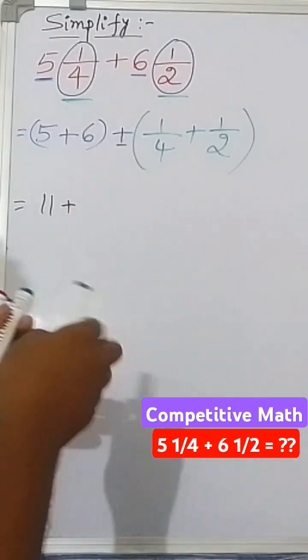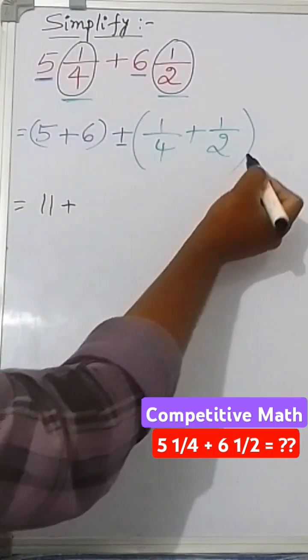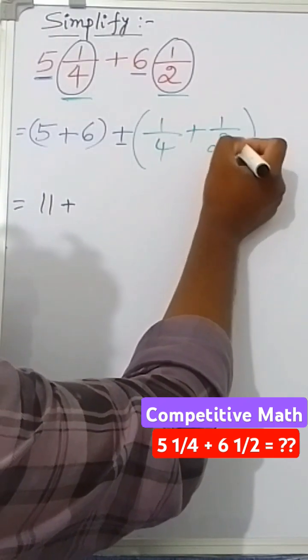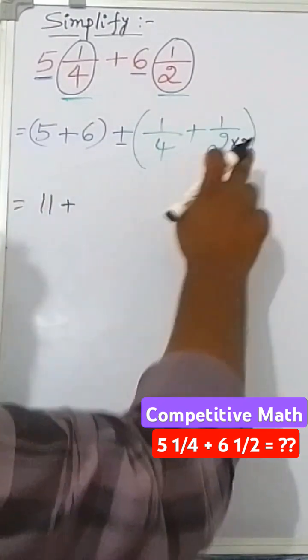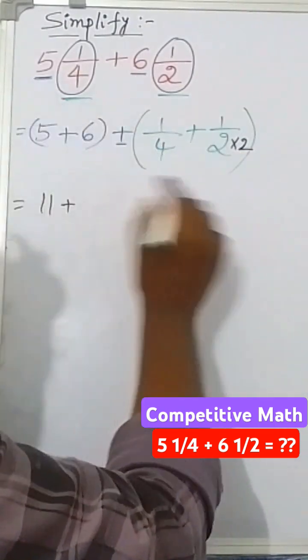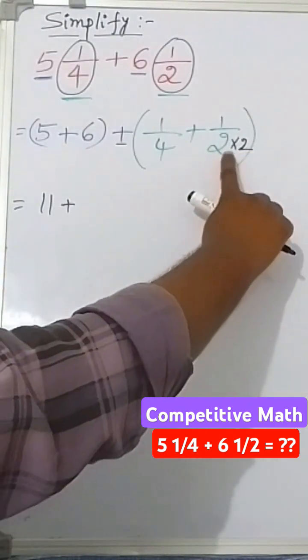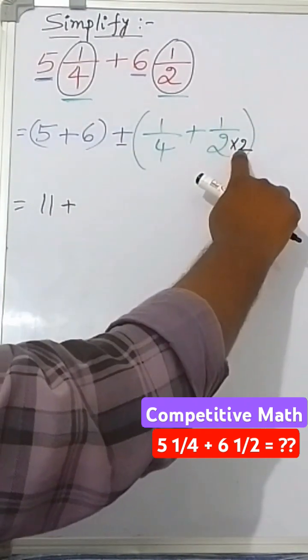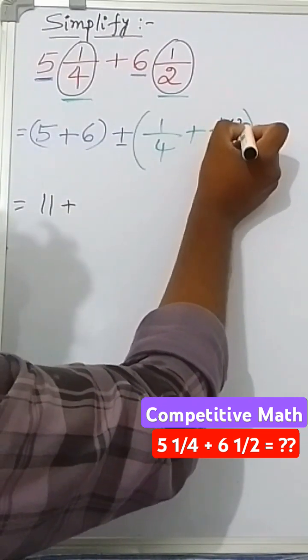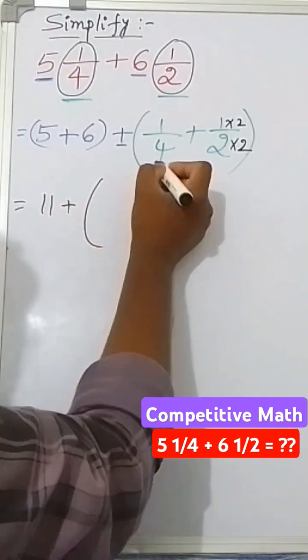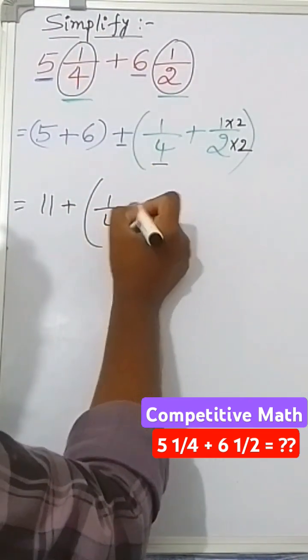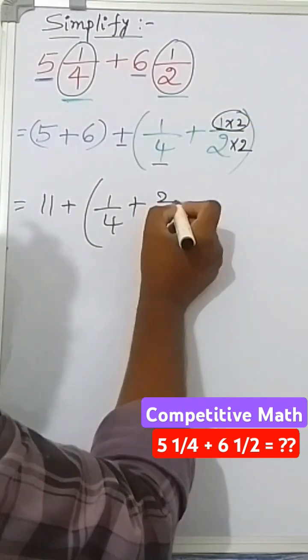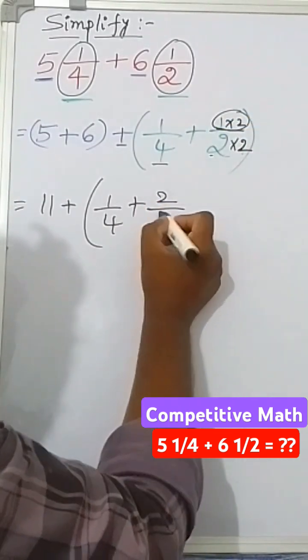Here 4 is there, so let us make this 2 into 4. What can we do? Multiply this 2 by 2. 2 times 2 is 4. When you multiply the denominator by 2, you have to multiply the numerator by the same 2. So now it becomes: 1/4 plus 2/4.